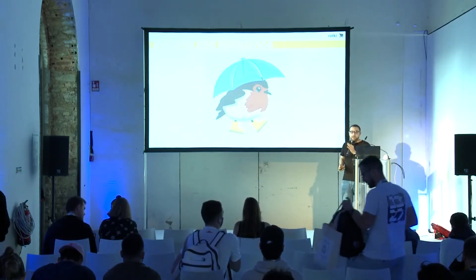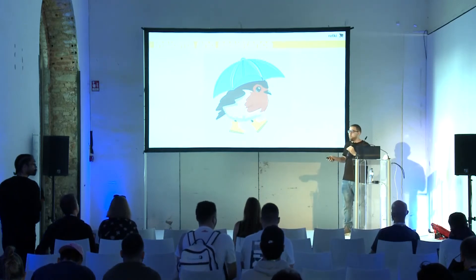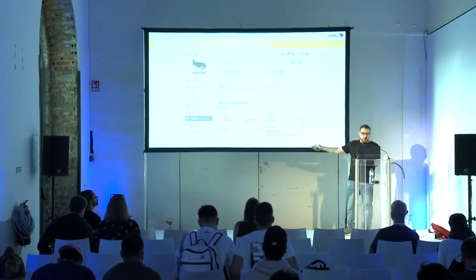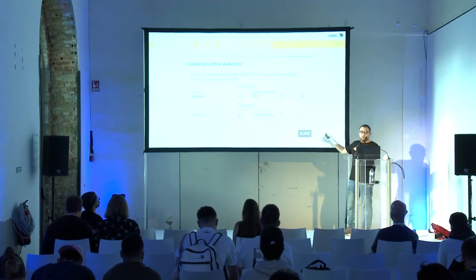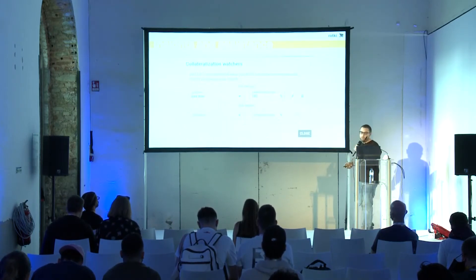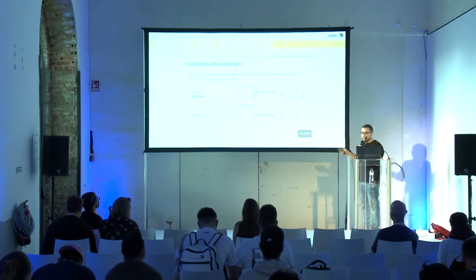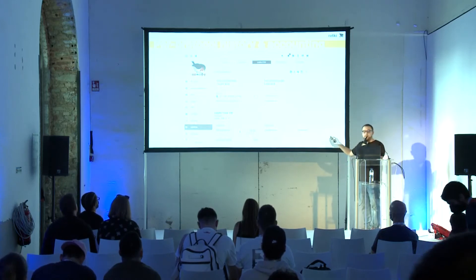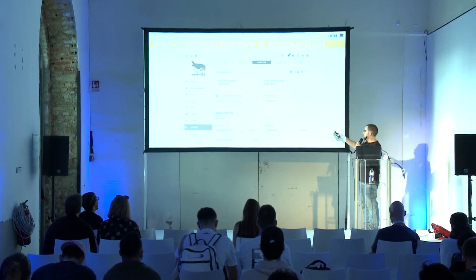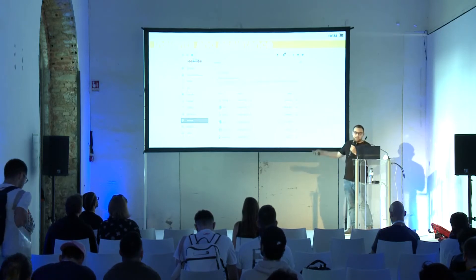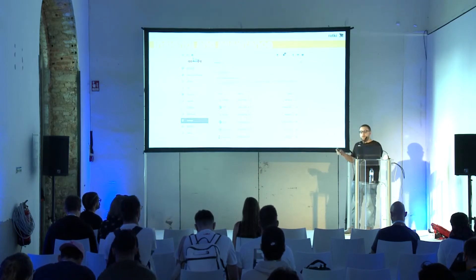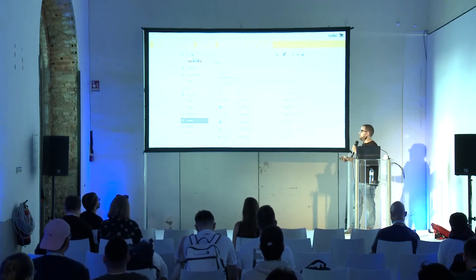Rotki also provides you with useful information. For example, if you have Maker vaults, you can see information about the vault like the collateralization ratio, and you have the possibility to set an alert so you will receive an email saying 'take care of your collateral.' We do the same for other protocols — like Liquity, which recently created a bounty for us to integrate them into the app. Also, in the case of airdrops, we do airdrop tracking for many of the popular ones, so if you have any address that had an airdrop, you will be notified in the app.